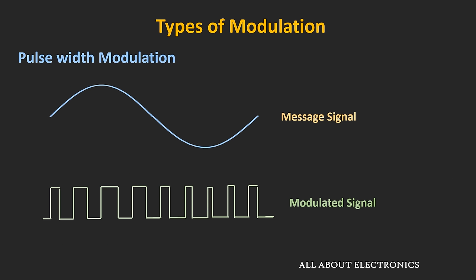In pulse width modulation, the height or amplitude of the pulse remains the same, but the width of the pulse changes according to the message signal. The message signal amplitude is sampled at the rising edge of each pulse, and the width of the modulated signal is proportional to the sampled amplitude. I have already made a separate video on pulse width modulation — you can check that for more information.